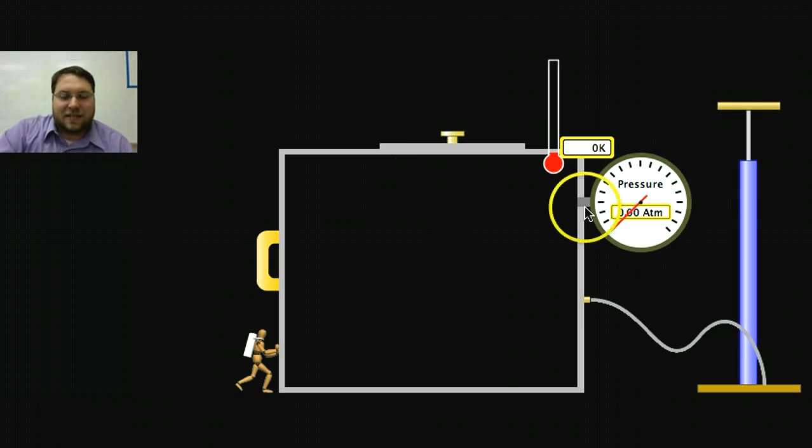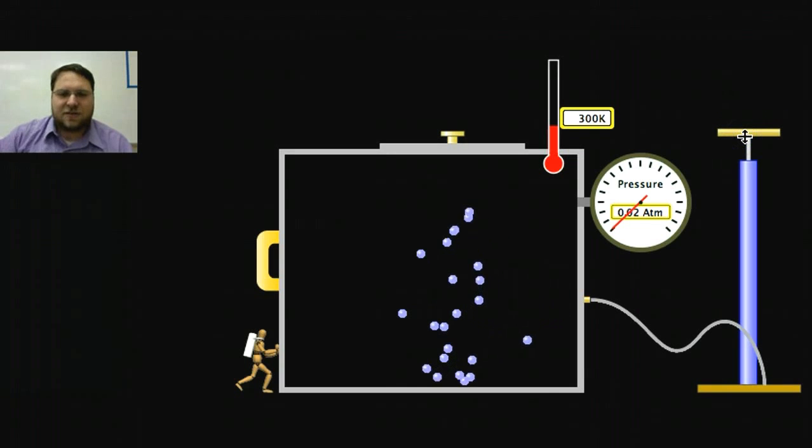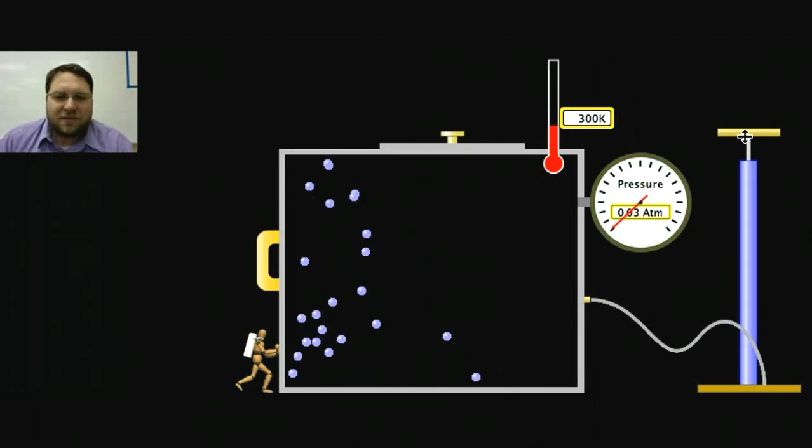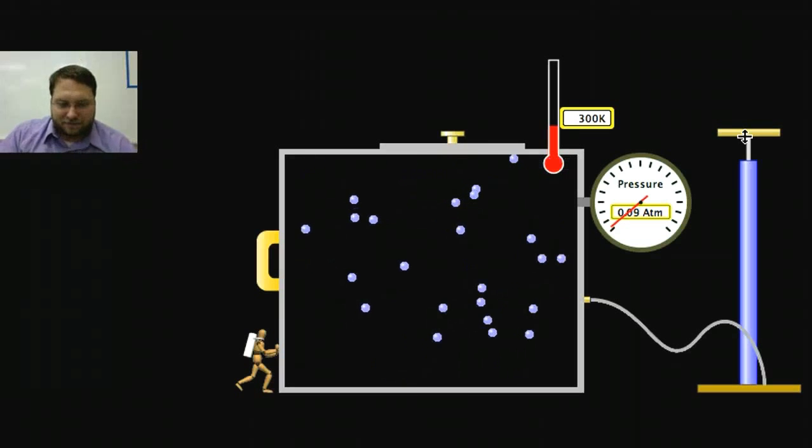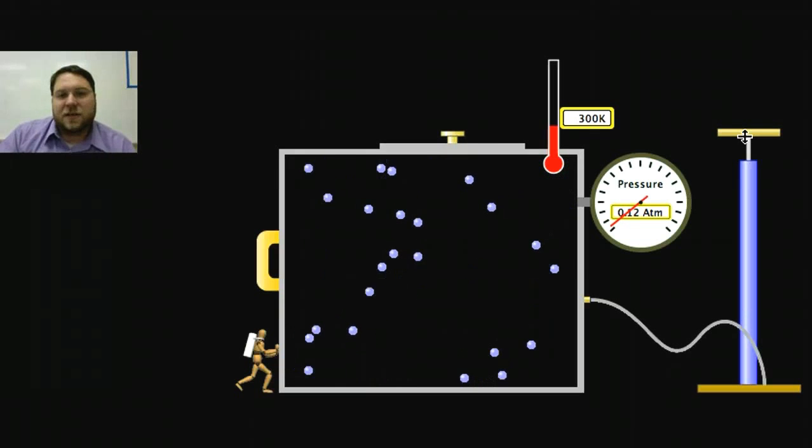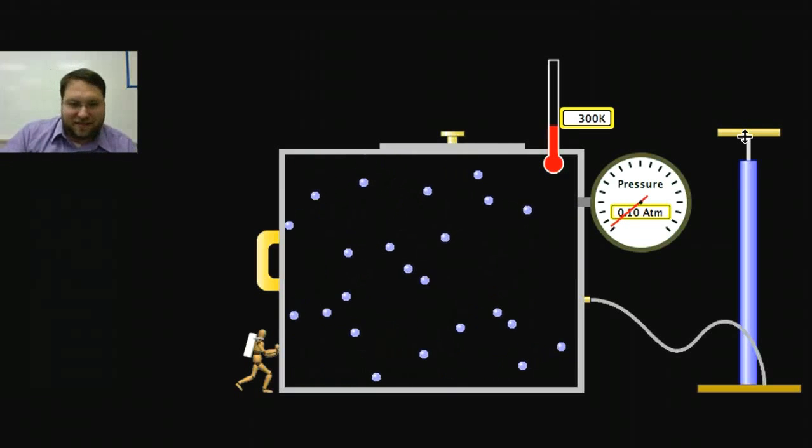So what I'm going to do is I'm going to take our handy-dandy PhET simulation here, and I'm just going to put some atoms in this box. And I'm just going to put a few. And you'll notice that as they move around, they bump against the walls of the container. This would be a force. Each atom pushes on that wall as it comes in contact with it.